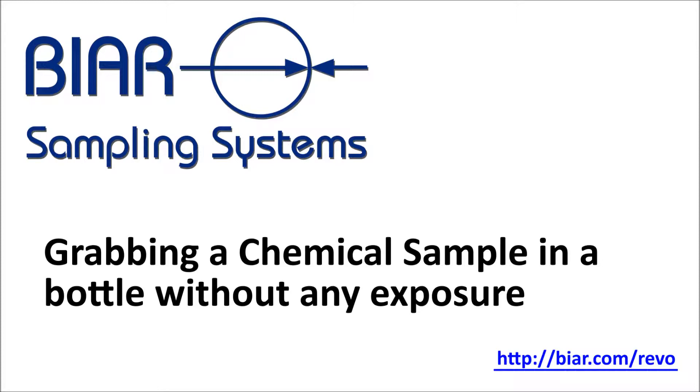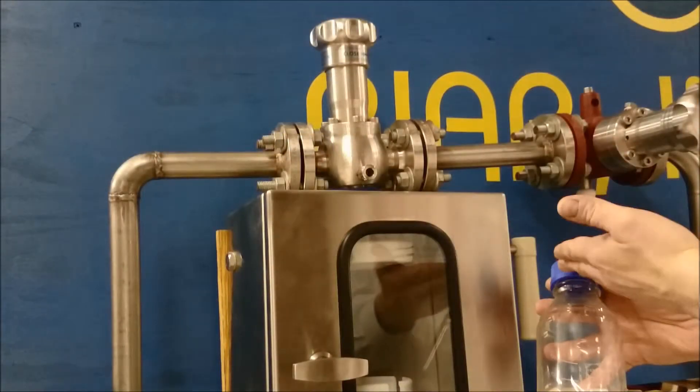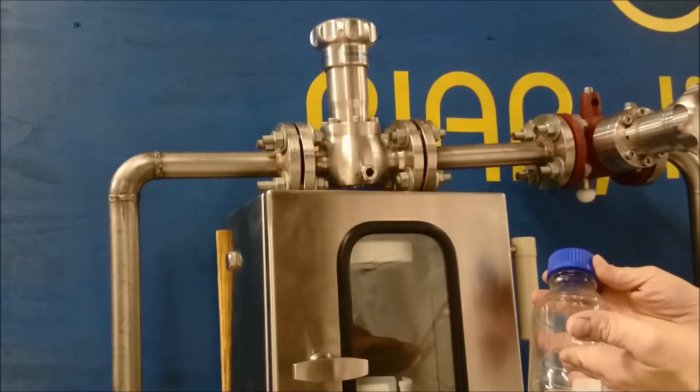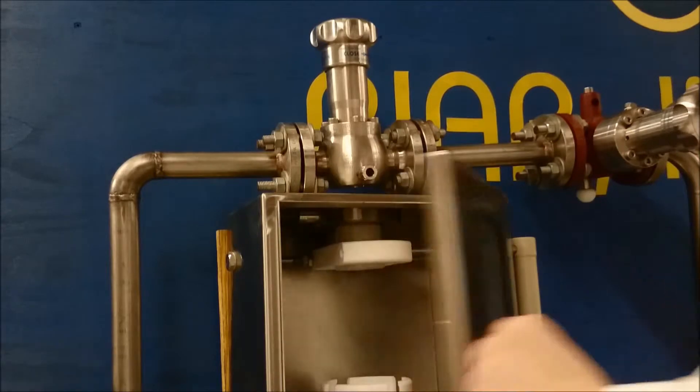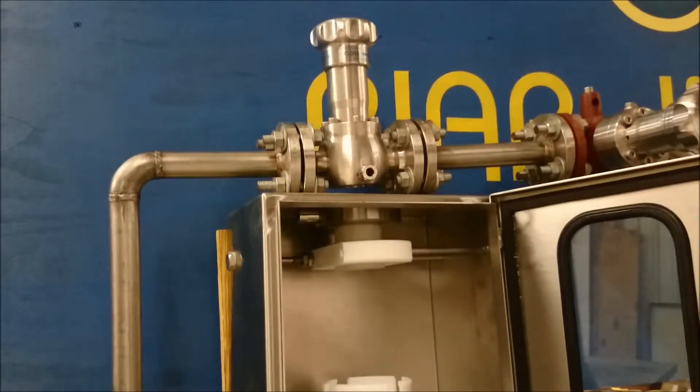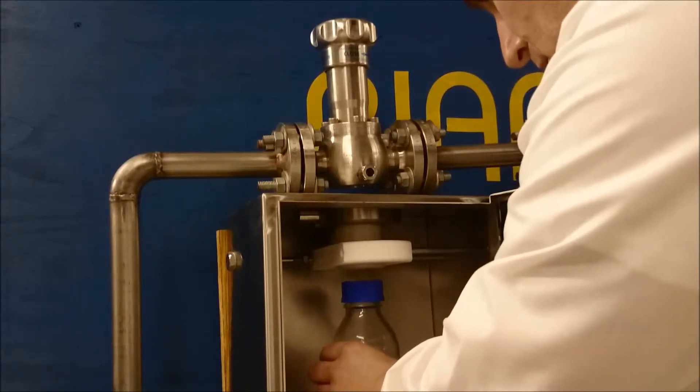The operator brings the bottle with the safety cap on to the sample station. His first step is to open the Revo box. Then he lowers the support of the bottle, fits the bottle onto the support, raises the bottle, and makes sure the cap is secured into the cap holder.